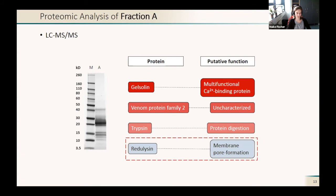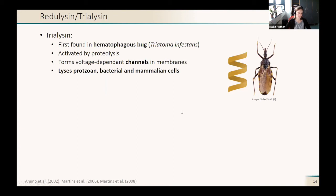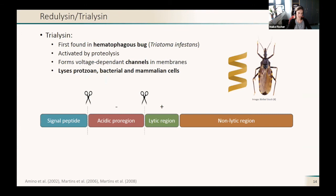I will focus now on the redilysin, which has first been found in a hematophagous bug in Triatoma infestans. It is activated by proteolysis and forms voltage-dependent channels in membranes. It has been shown that trialysin from Triatoma infestans lyses protozoan, bacterial, and mammalian cells. The signal peptide of this trialysin is cleaved off, and then the acidic pro region is also cleaved off, and then we have a positively charged lytic region and a non-lytic region. We found similar structures in our redilysins.